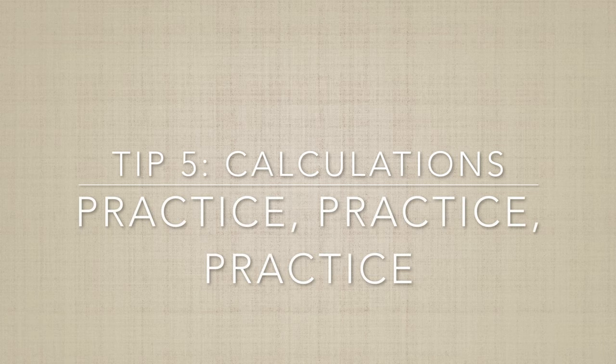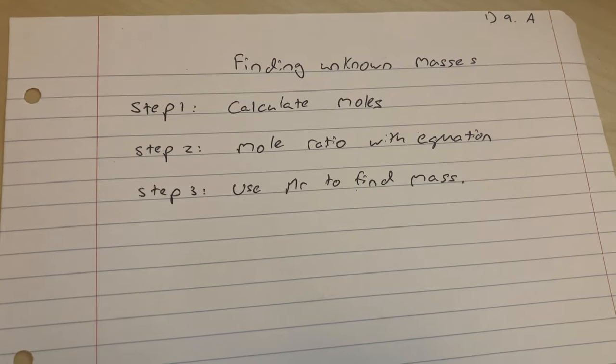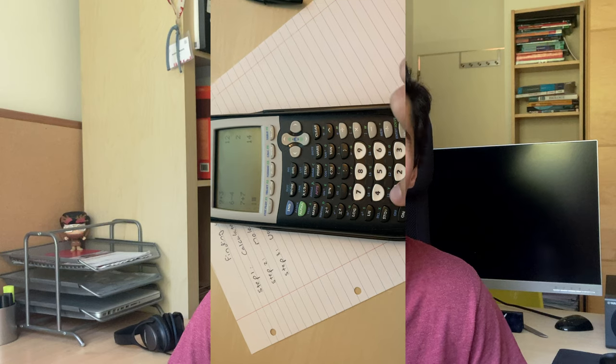My fifth tip is about calculation questions — just practice. This is basically like any other maths paper where you practice the different question types and make sure you really know them. With any science, they reuse the same question formats across basically all questions, with maybe around 10 different formats for different types of questions. If you understand and are completely familiar with all of them, you can lay out a series of steps for each format and apply this whenever you get a question in that format. You just plug the numbers into the calculator for each step and get the answer easily.